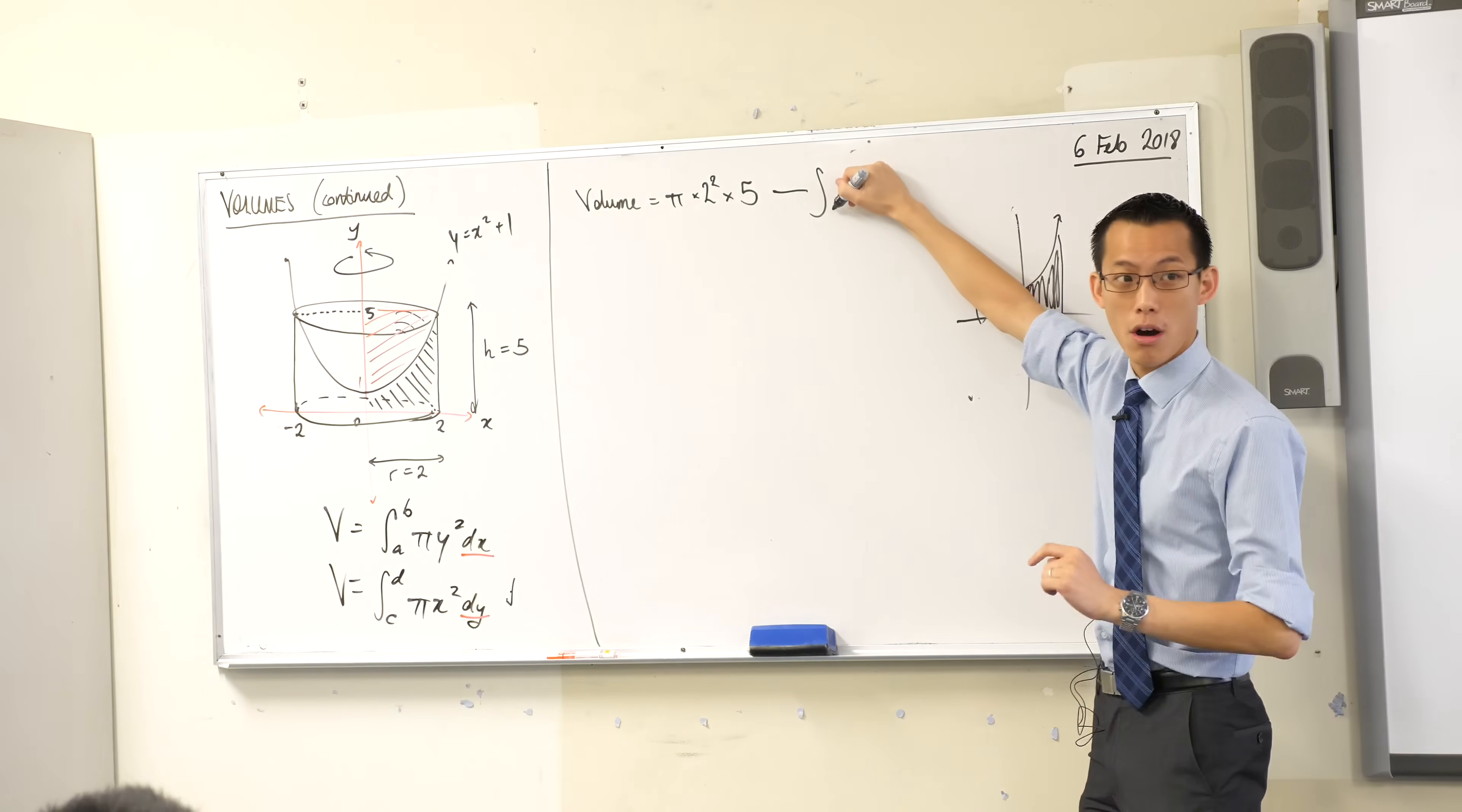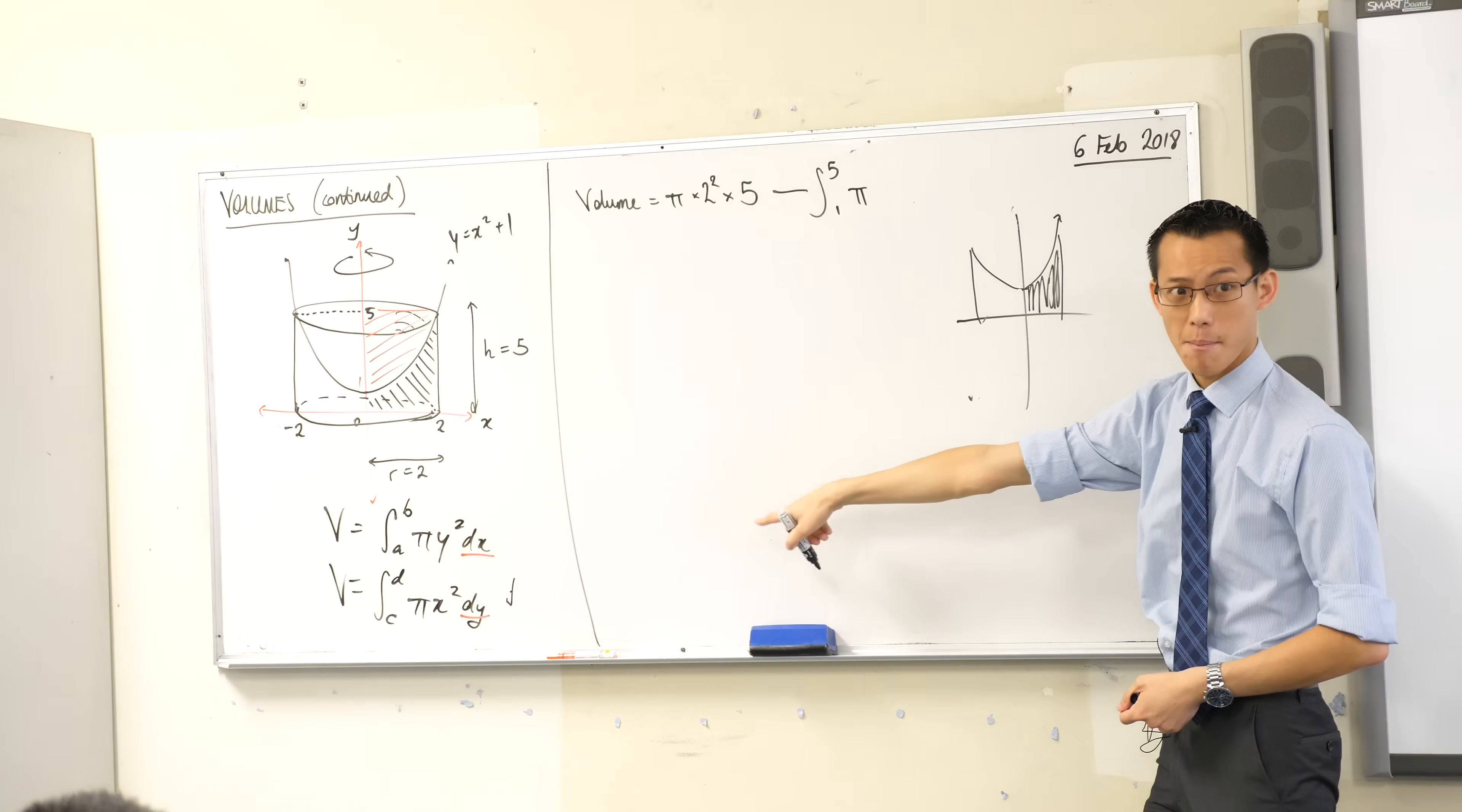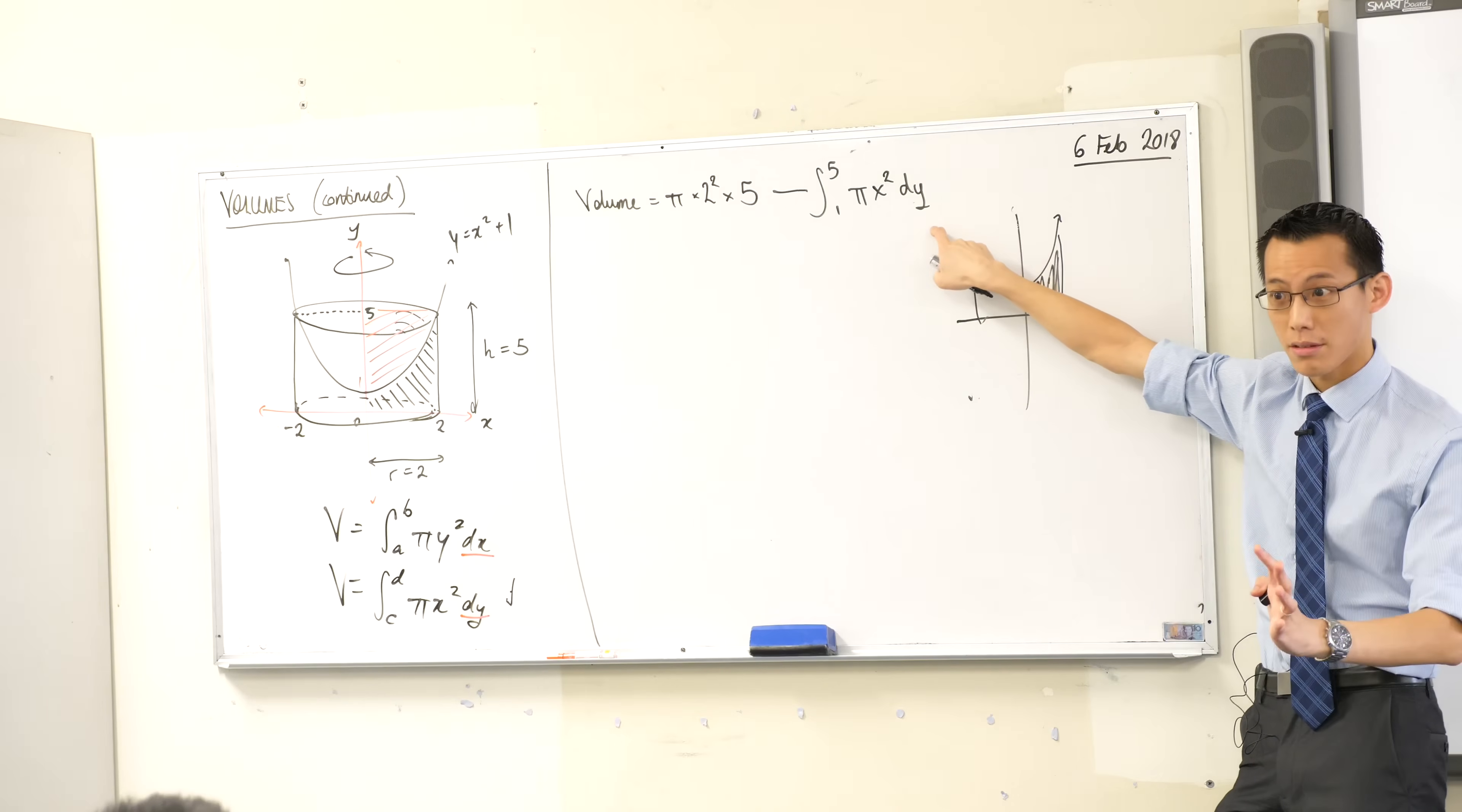So I'm going to form the integral. It's from one to five because it's going around the y-axis, so I'm interested in y boundaries. And it's going to be π, look down there, x squared dy, right? Because I'm rotating around the y-axis. So y boundaries with respect to y, does that make sense?